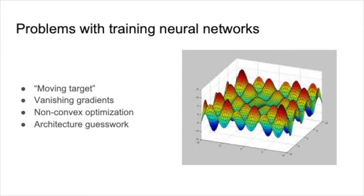So, what is the motivating problem? Training a neural network is a non-trivial task. There are several problems that arise in training, such as moving targets, vanishing gradients, non-convex optimization, and architectural guesswork.